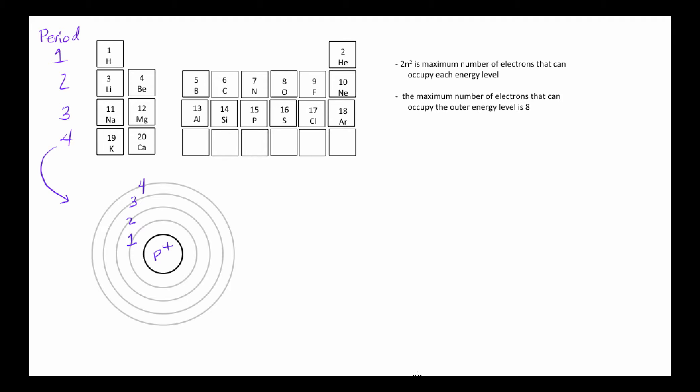Now that we know a little bit about the structure of an atom, let's look at how the structure of an atom, especially in terms of how many electrons that atom has, determines where that atom will fall in the periodic table.